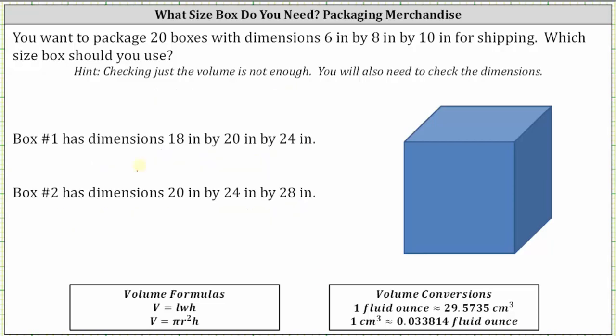Again we know box one is a no. Let's label this large box on the right as box two. Let's label this edge 24 inches, this edge 20 inches, and this edge 28 inches. We want to place the 20 boxes inside this large box with the least amount of waste. And again notice how each small box has dimensions 6 inches by 8 inches by 10 inches.